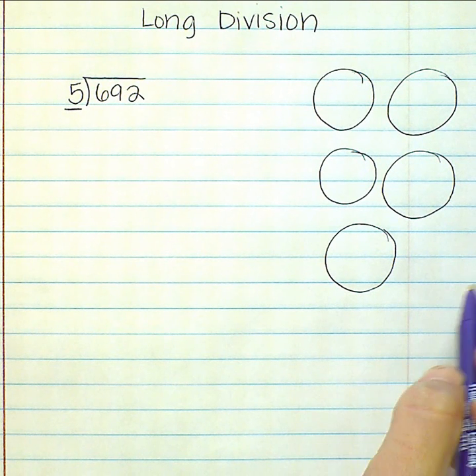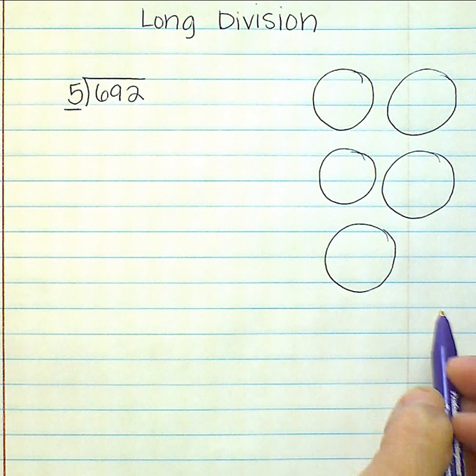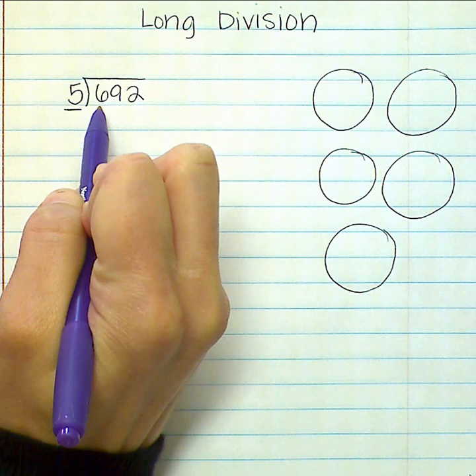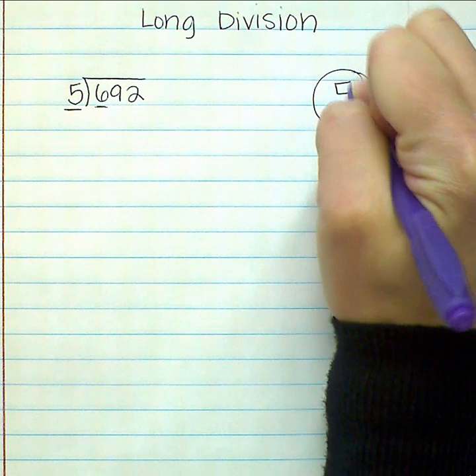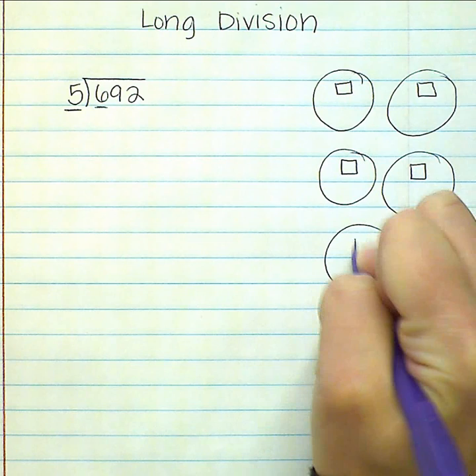Then we're going to figure out how many hundreds we have to divide evenly among our groups. Looking at our number, we can see that we have six hundreds to divide evenly. So I can put one flat or one hundred in each group evenly.